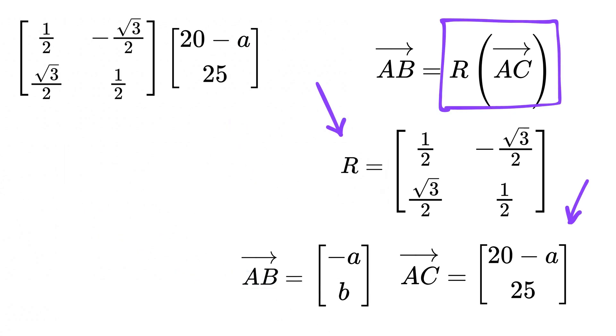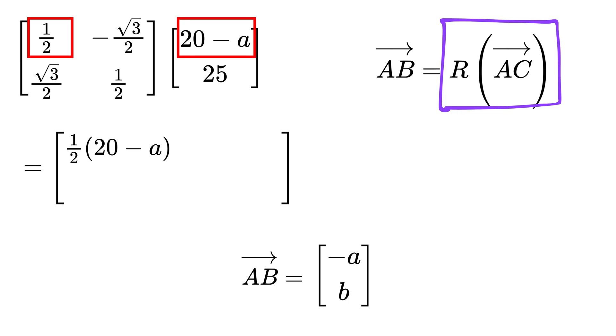So, if we multiply this vector with the rotation matrix, we get this value times this value plus this value times this value as the first row.